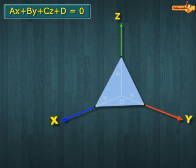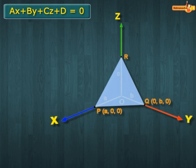Hence, the plane meets X, Y and Z axis at point P with coordinates A, 0, 0, point Q with coordinates 0, B, 0, and point R with coordinates 0, 0, C respectively.